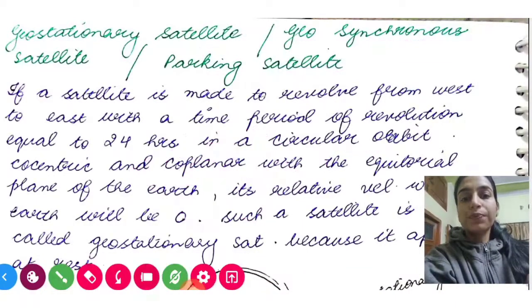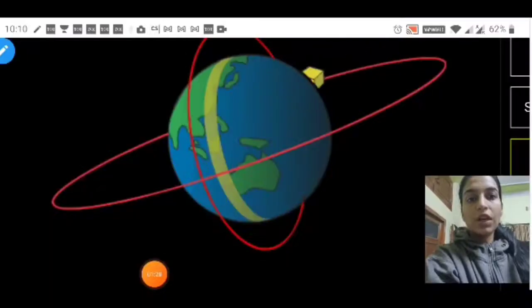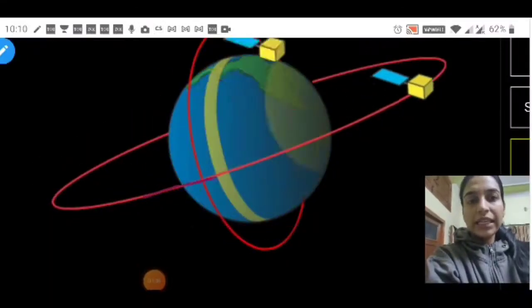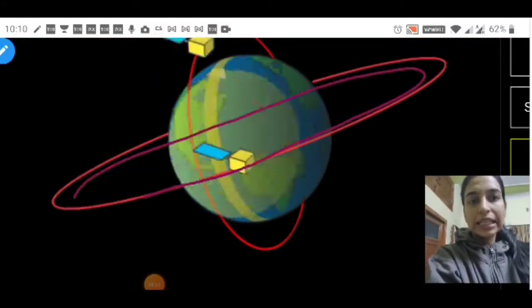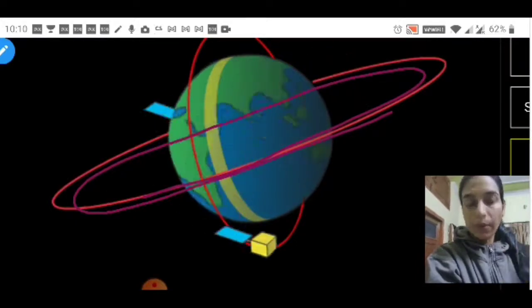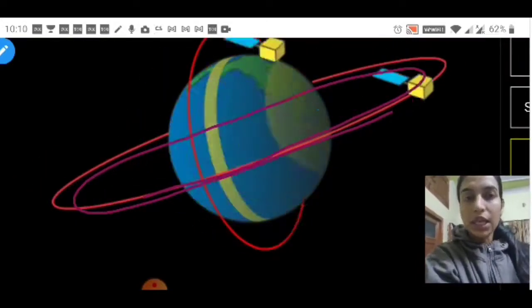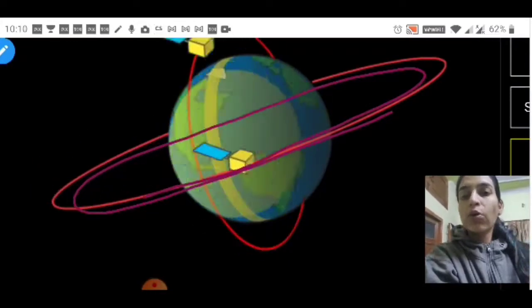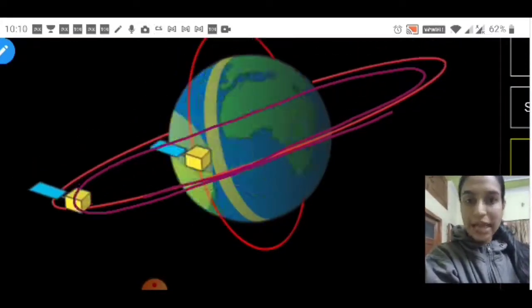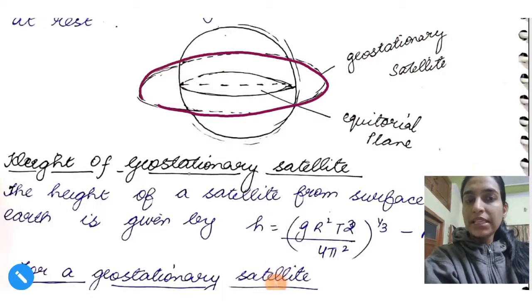So I'll show you a gif, you'll understand. Can you see this one on this line? The same way the Earth is rotating, the same way the satellite is revolving around the Earth. So what do we call this? Geostationary satellite. This is how you'll draw the diagram. You'll draw the figure.